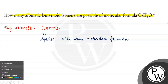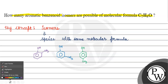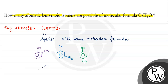If we want to see how many benzenoid isomers are possible with molecular formula C7H8O, we will talk about the first isomer, then the second, then the third benzenoid isomers of C7H8O.